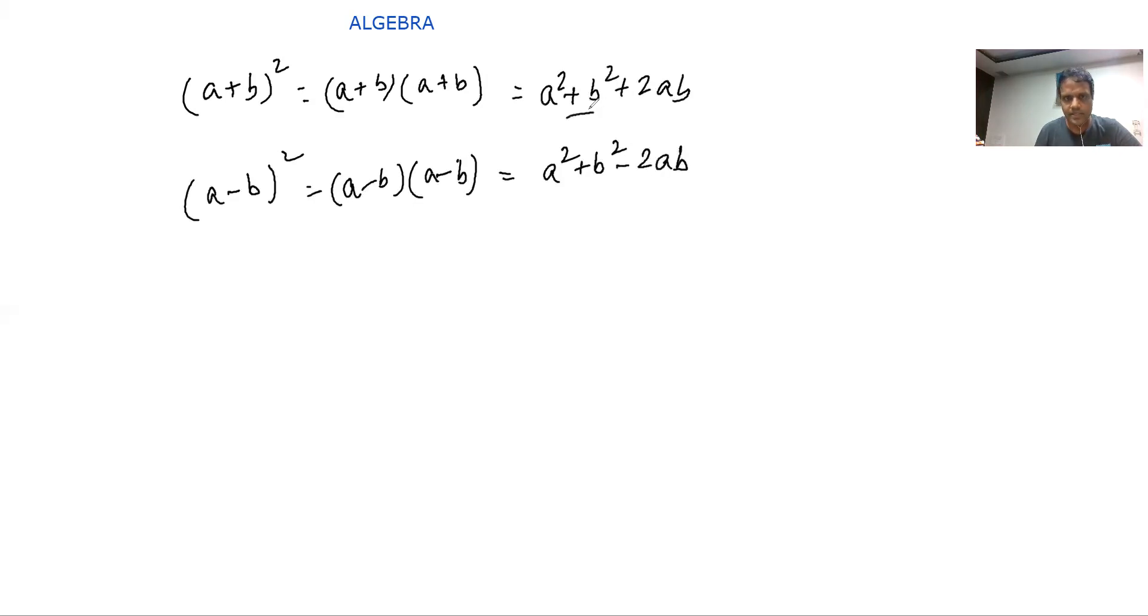How am I getting this? Very simple. Multiply these two: a into a is a², a into b is ab, b into a is ba, b into b is b². What does it come to? a² + b² + 2ab. This you should know by heart. Similarly, (a-b)² is a² + b² - 2ab. We can do that in a very similar fashion.